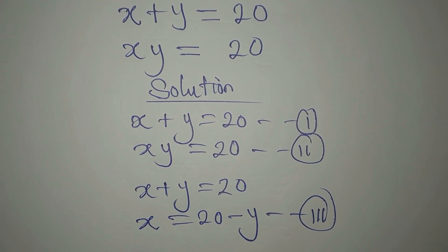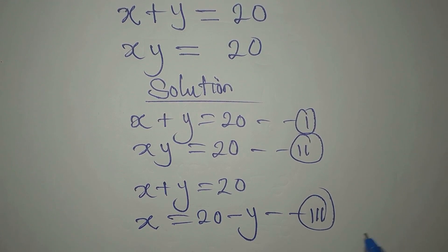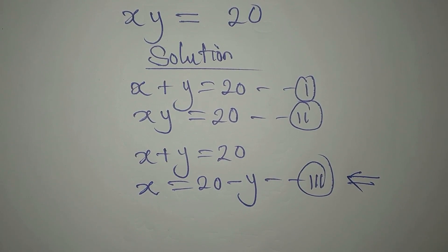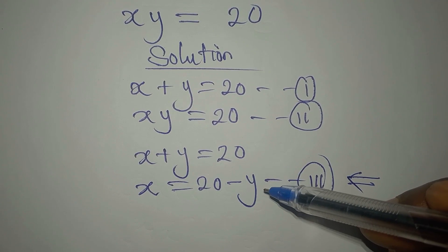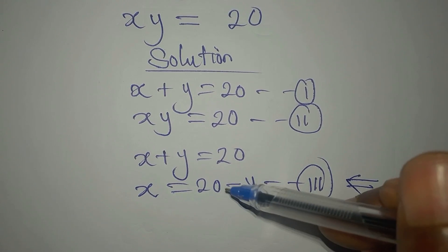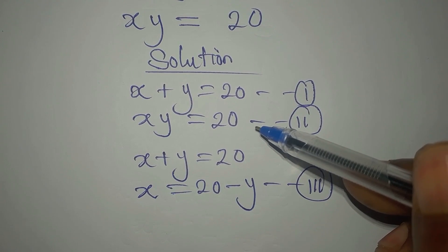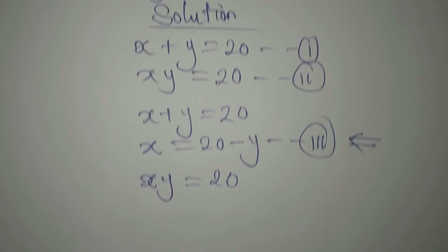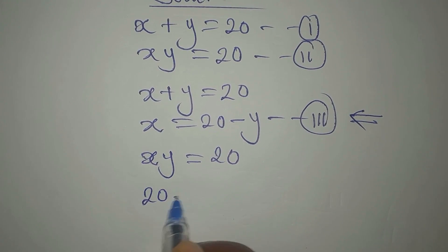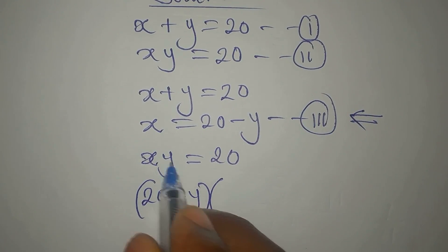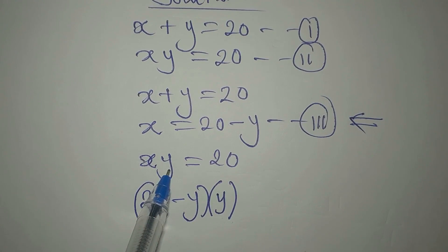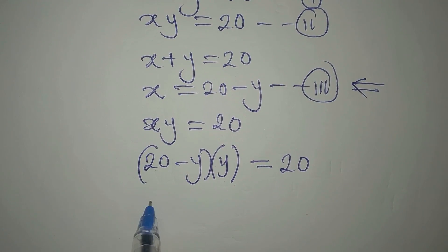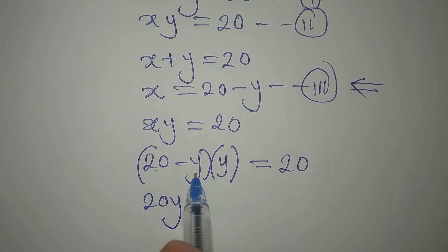Immediately we have our value of y, we'll come back and put it into equation three. But now, since equation one gave birth to equation three, let's put this value of x in equation three into equation two. Now our equation two is xy = 20. Our x is 20 - y, then into y. There's y outside this particular one, and this is equal to 20.